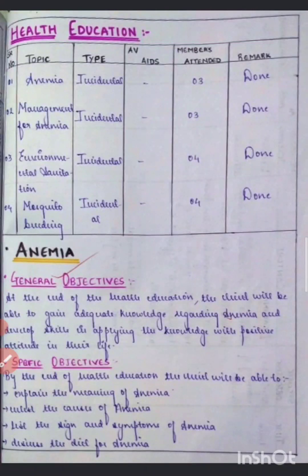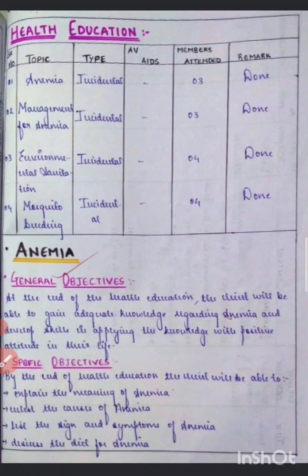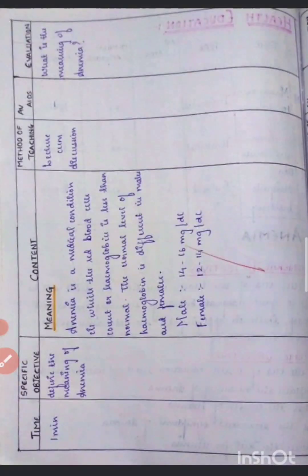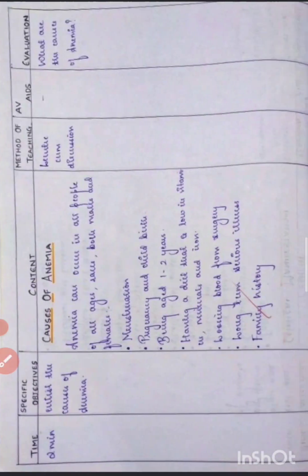In community health nursing, you'll have to mention the health education given to the family members or the patient. The health education covers anemia: the general objective, specific objectives, meaning of anemia, clinical manifestations, causes of anemia, the diet they have to take for anemia, and lastly a summary.